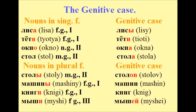The nouns in singular form: Fox — Лиса → Лисы. Aunt — Тетя → Тети. Window — Окно → Окна. Table — Стол → Стола. Now the nouns in plural form: Tables — Столы → Столов. Cars — Машины → Машин. Books — Книги → Книг. Mice — Мыши → Мышей.